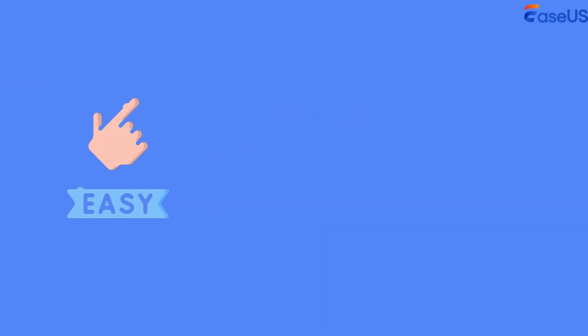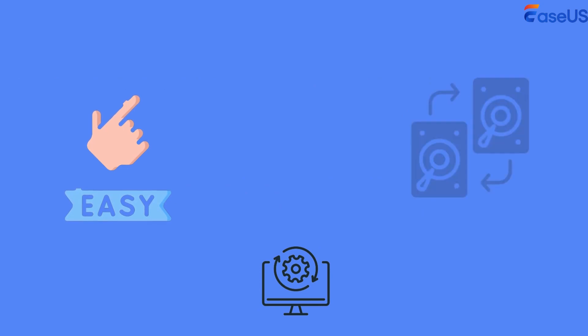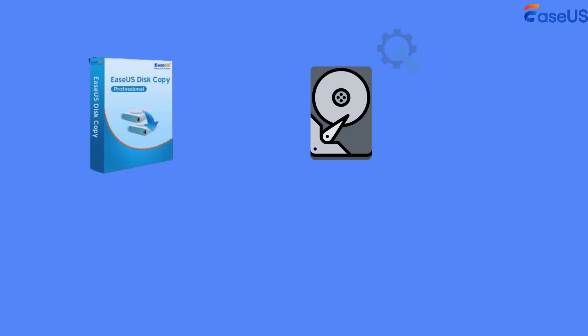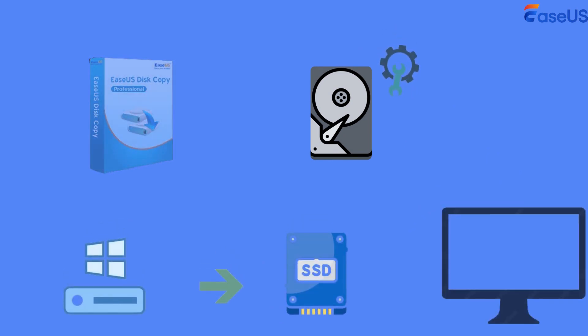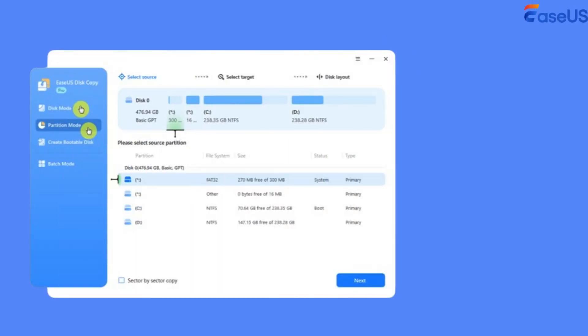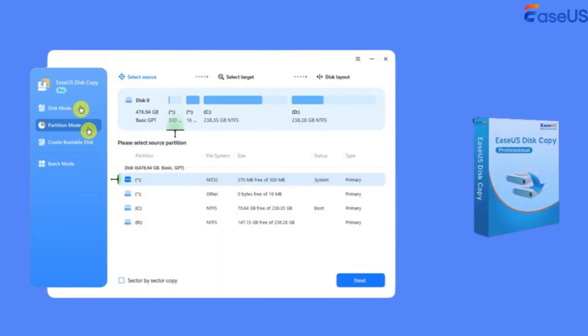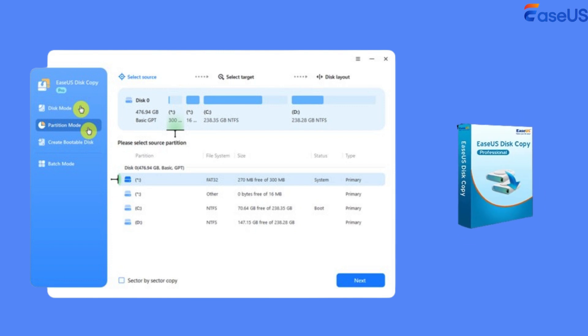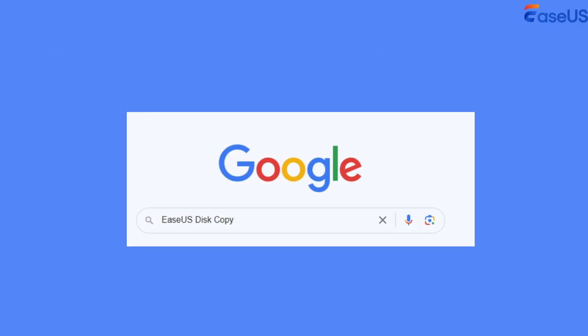The easiest way to copy C drive to new SSD is to use professional disk cloning software. EZUS disk copy is dedicated and reliable disk clone software that lets you clone C drive to SSD in Windows PCs. In addition to disk mode, it also contains the partition mode option to clone specific partitions to SSD. You can go to the EZUS disk copy homepage to download and install it.